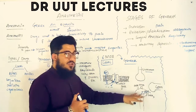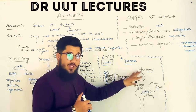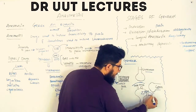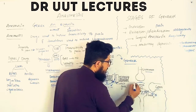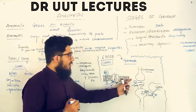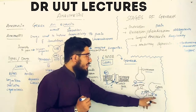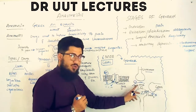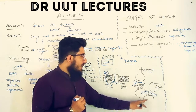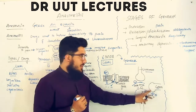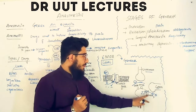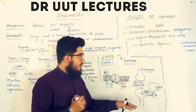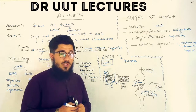Glutamate neurons stimulate the neuron while GABA neurons inhibit it. For anesthesia, we need inhibition. We block the AMPA and NMDA receptors so glutamate cannot bind, and we stimulate the GABA receptors so chloride influx increases, making inside more negative. This way, inhibition is achieved and the general anesthetics exert their effect.